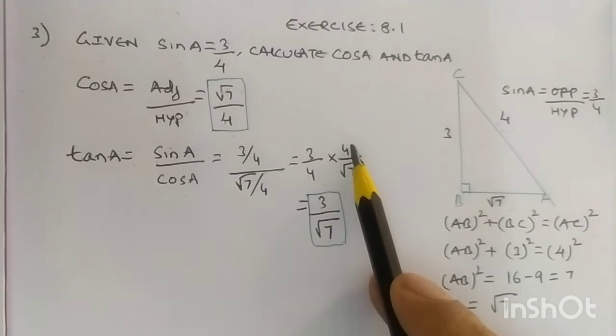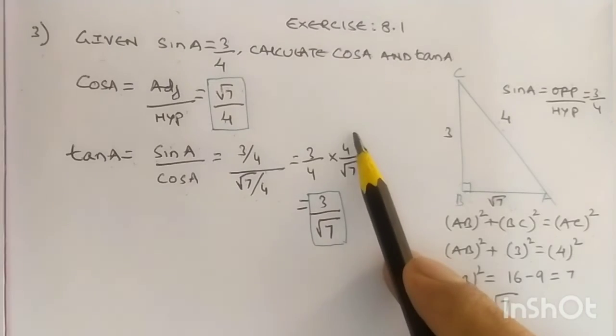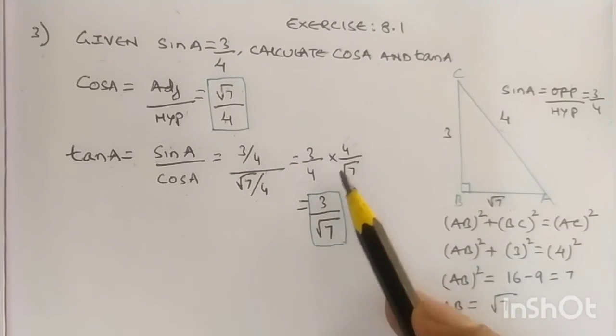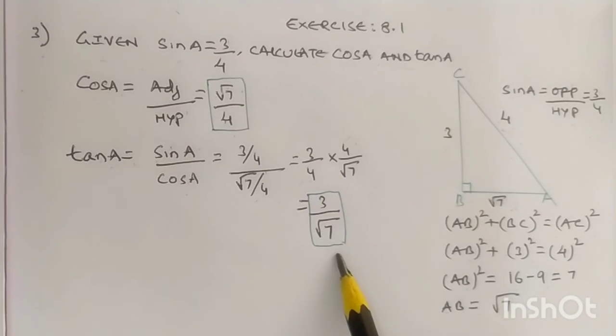This is the reciprocal. On canceling 4 and 4, we get 3 upon root 7. So tan A equals 3 upon root 7. This is our answer.